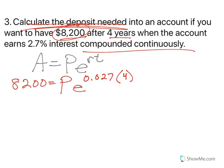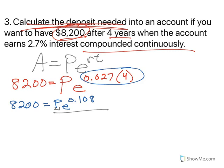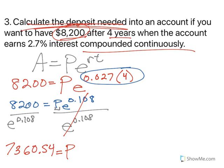Thinking through your order of operations, we've got to multiply these two together first. So 8,200 equals P times E raised to the .108. Now, again, we're trying to get P by itself. So we would divide by E raised to the 1, 0.108. By doing so, right, these would cancel out. And we get approximately $7,360.54.